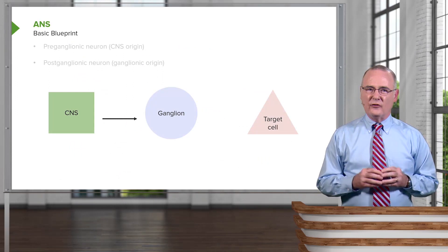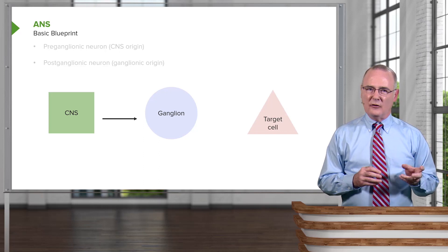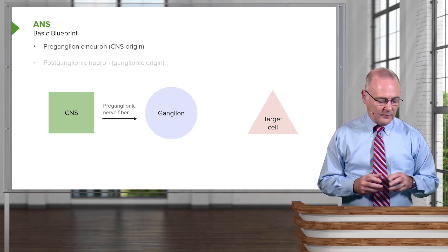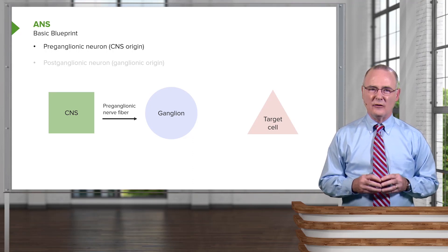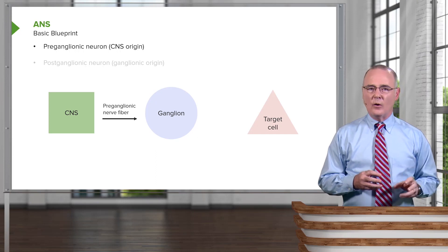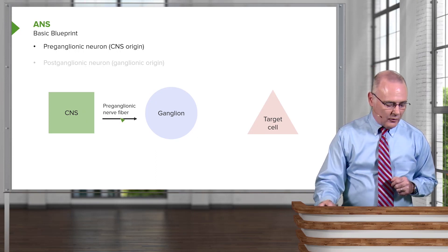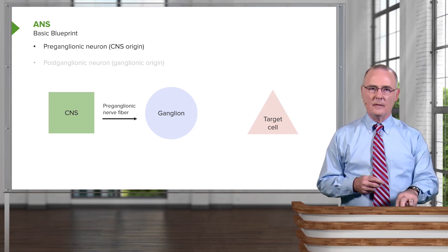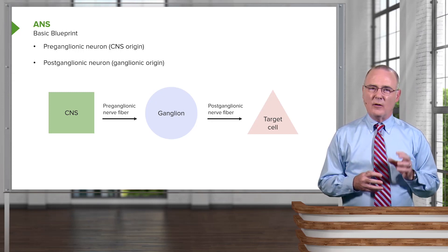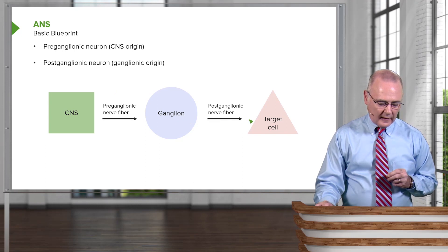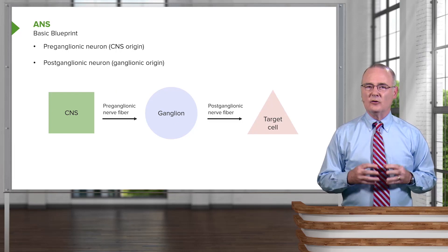The autonomic nervous system has a very simple or basic blueprint. The parasympathetic system, as well as the autonomic nervous system, is comprised of two nerve cells that communicate with various structures. The preganglionic neuron of the autonomic nervous system has its cell body originating from the central nervous system, either the brain stem or the spinal cord. The preganglionic nerve fiber then extends outward to the periphery and synapses within a ganglion. Within the ganglion, you have the nerve cell body for the postganglionic neuron, and that postganglionic neuron then extends its axon or nerve fiber further out to the periphery where it innervates the target cell.